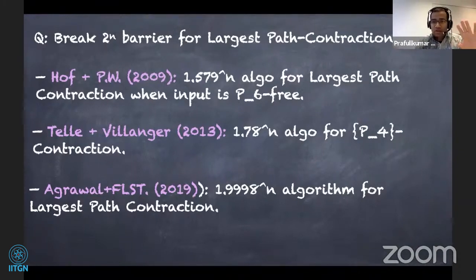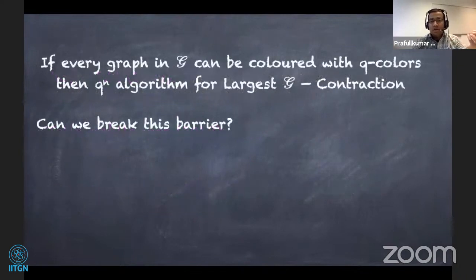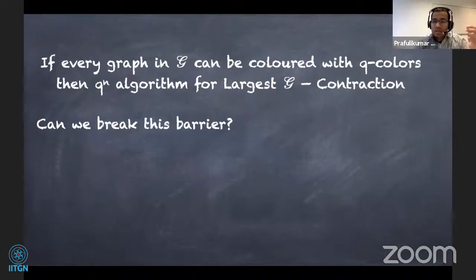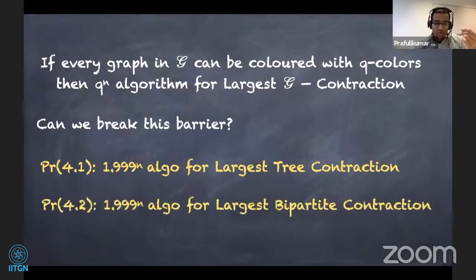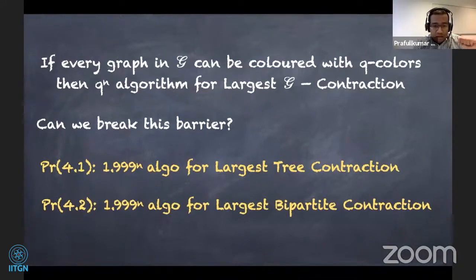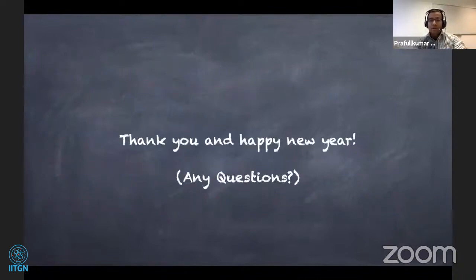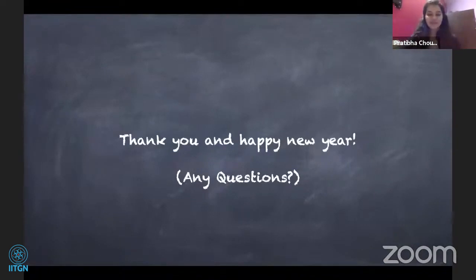These simple algorithms can be generalized: if every graph in C can be colored with q colors, there is an algorithm running in time q^n · poly(n) for largest C-contraction. The natural question is: can we break this barrier as we did for path contraction? More concretely, can we have a 1.999^n algorithm for largest tree contraction, or similar algorithms for largest bipartite contraction? I'd like to keep these as open questions, and with this I conclude this talk. Thank you and happy new year!